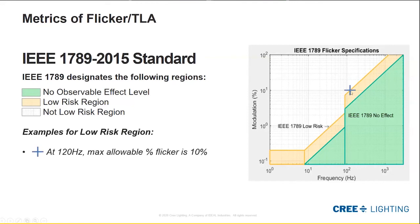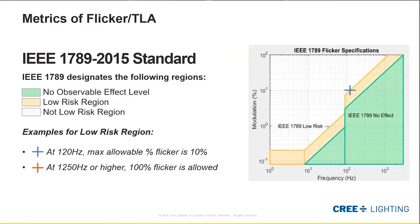For example, at 120 hertz, about 10% flicker is allowed in the low-risk region — so 1,000 lumens would fluctuate by 100 lumens. As you go up to about 1,250 hertz or higher, you could actually have 100% flicker because it's modulating so fast — 1,250 times per second — that human physiology cannot pick it up and there are no stroboscopic effects. When we start talking about machines, lasers, videotape, and digital processes that could have problems, we'll cover that in the application session in two weeks.